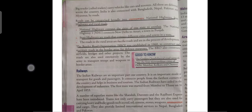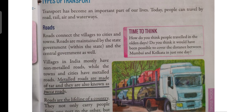Now let us answer the Time to Think questions. How did people travel in olden days? In olden days, people had no means of transport, so they walked on foot, and sometimes used animals to carry their goods. Was it possible to cover the distance between Mumbai and Kolkata in one day? No, it was not possible in olden times as these places were very far. But today, by taking a flight, we can cover the distance in just one day.